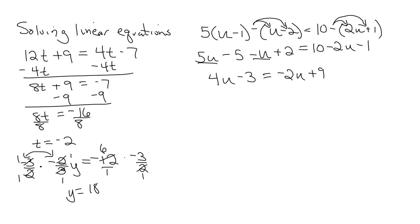Next step, let's get the variables together. Again, I like to take the smaller to the larger, so plus 2u plus 2u. So 6u minus 3 is equal to 9.